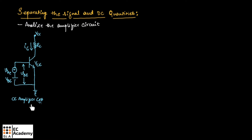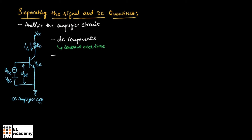Let us consider the common emitter amplifier circuit as shown in this figure. The amplifier circuit consists of two important components. First one is DC components, which are constant over time. The second component is AC components, which are also known as signal components. These components will vary with respect to time.